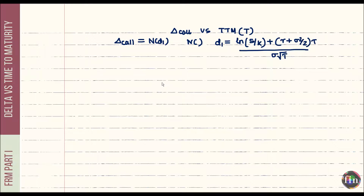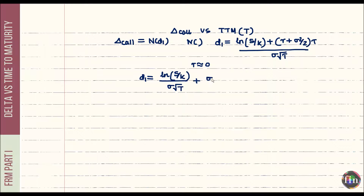Before moving ahead, I'll make a simple assumption that won't affect the nature of our results: let's assume interest rates are very close to zero. With that, d1 separates into two terms: the first is ln(S/K) divided by sigma times root T, and the second is sigma times root T over 2.